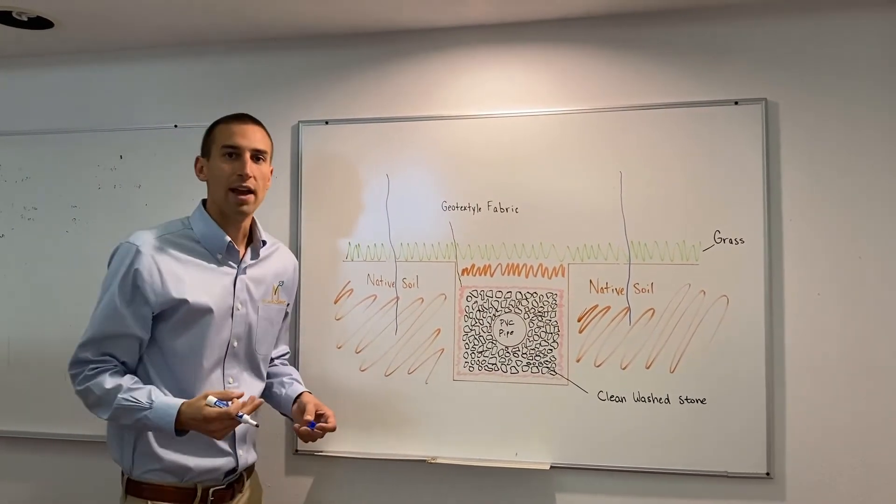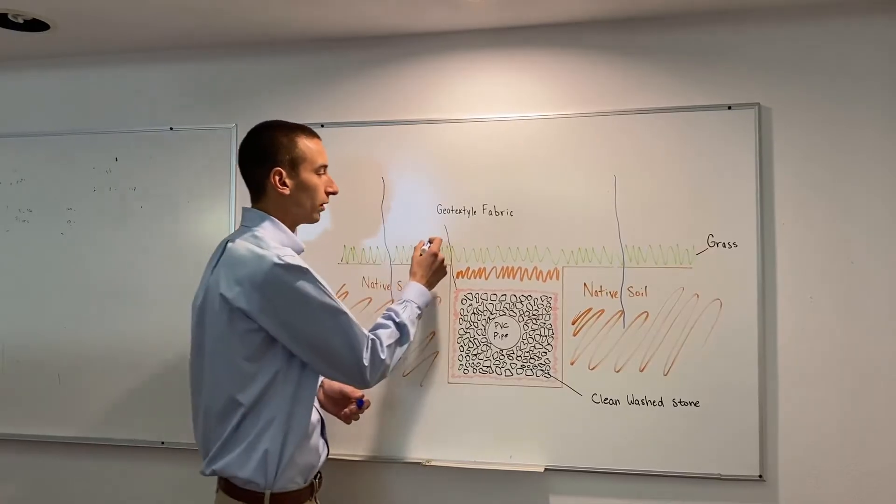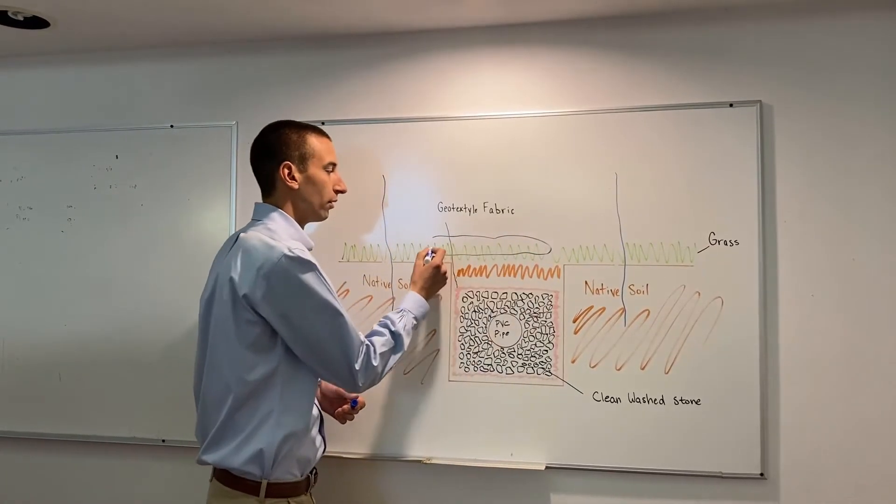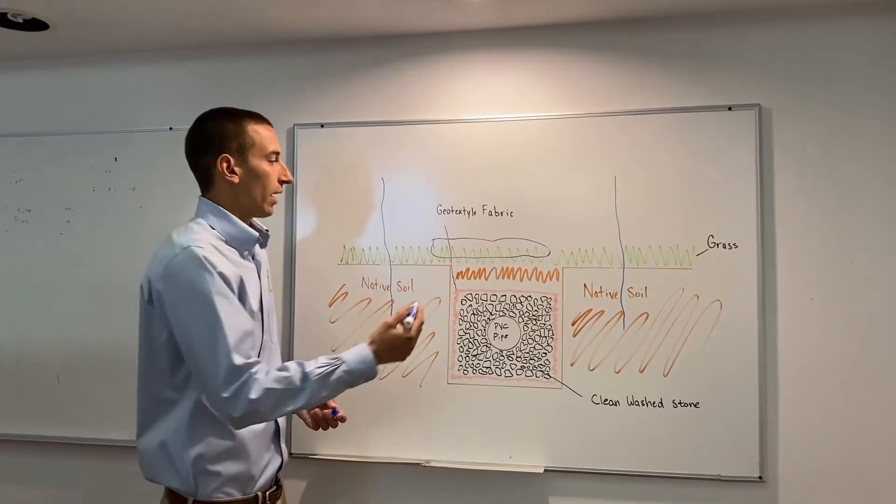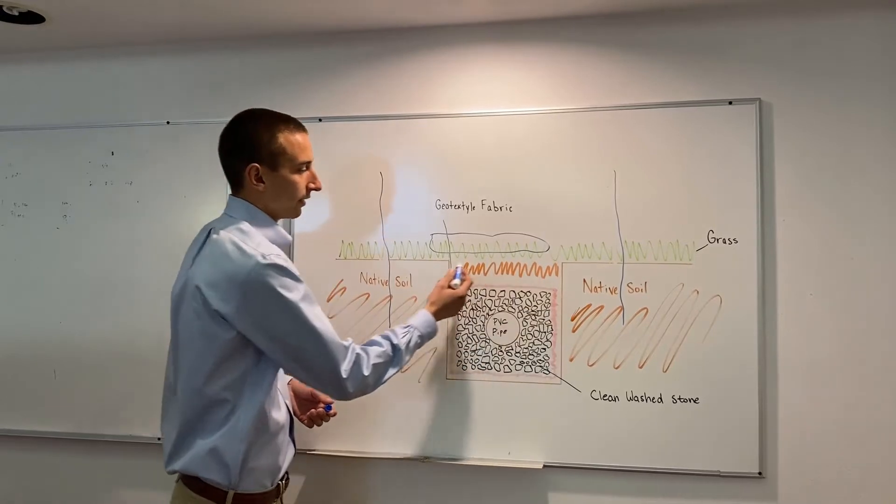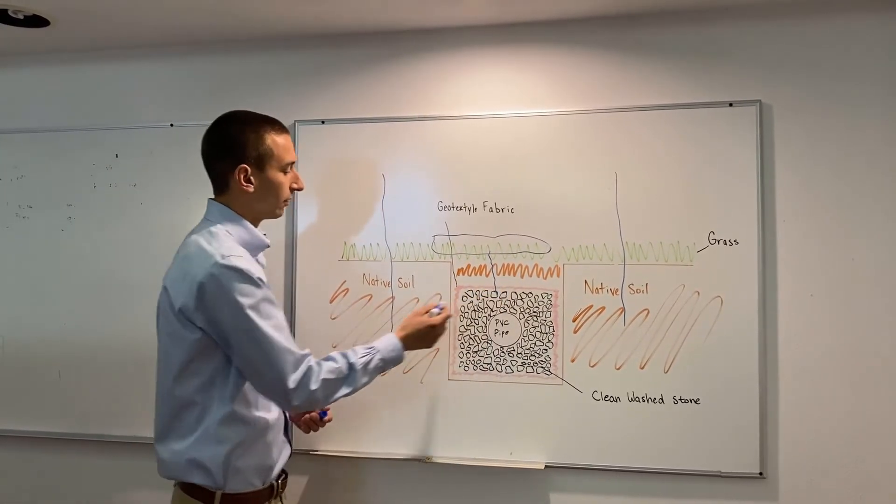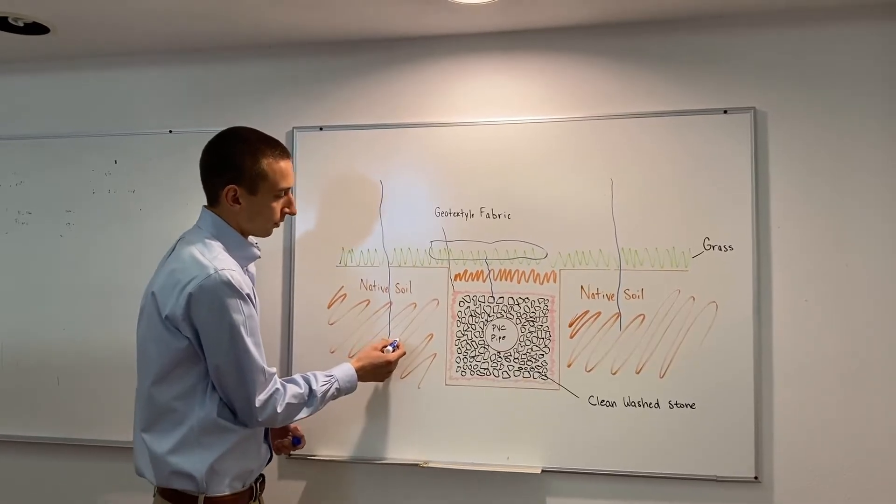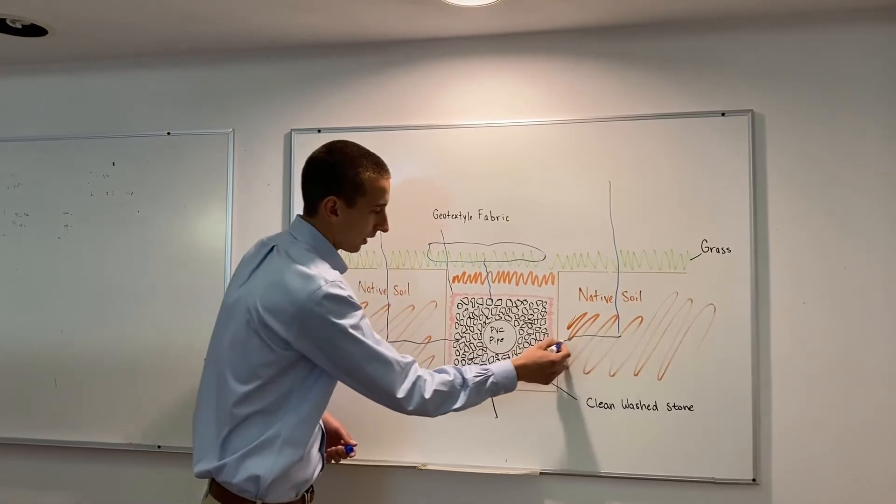Some areas will have heavy clay contents within the soil and that will cause pooling on top of the soil, and that's why we want to add a French drain. By removing the clay content here, we've allowed the water to enter more easily into this French drain so all the water within the soil can enter the French drain.